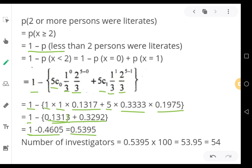0.5395 is the probability of getting 2 or more persons as literates. Now, you should get the number of investigators getting such thing. Therefore, 0.5395 into big N. Big N value in this sum is 100. Therefore, if you multiply by 100, you will get 53.95. So if you round it off, your answer should be 54.